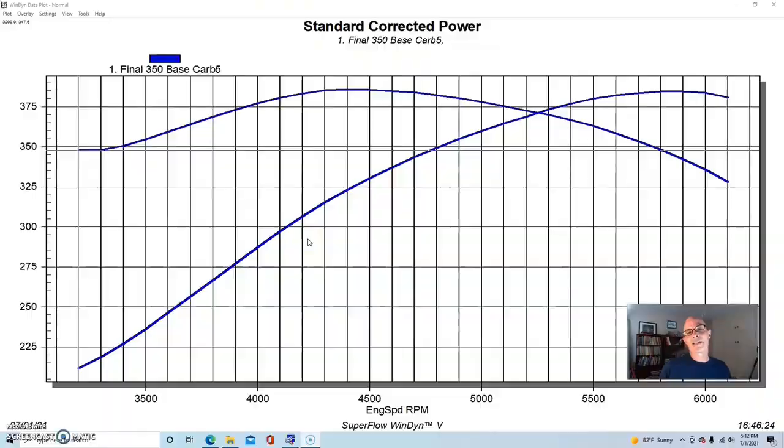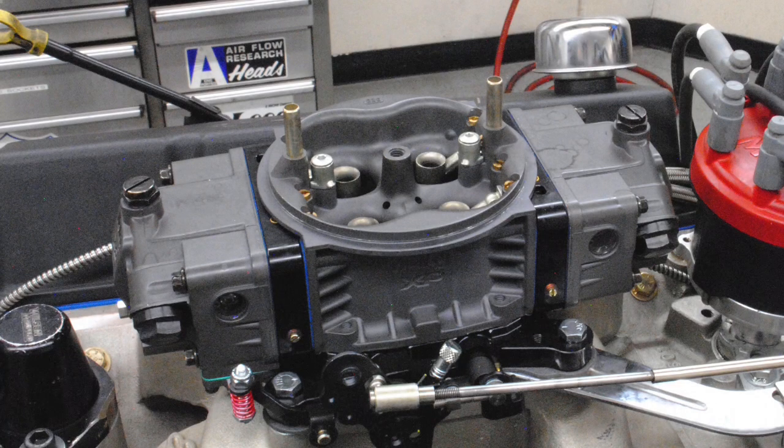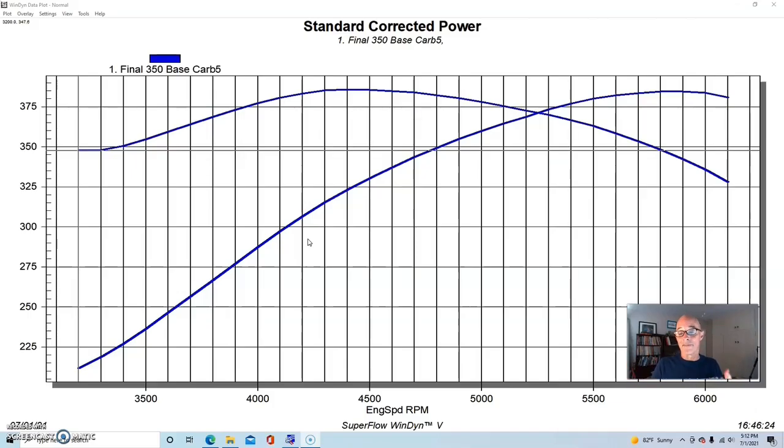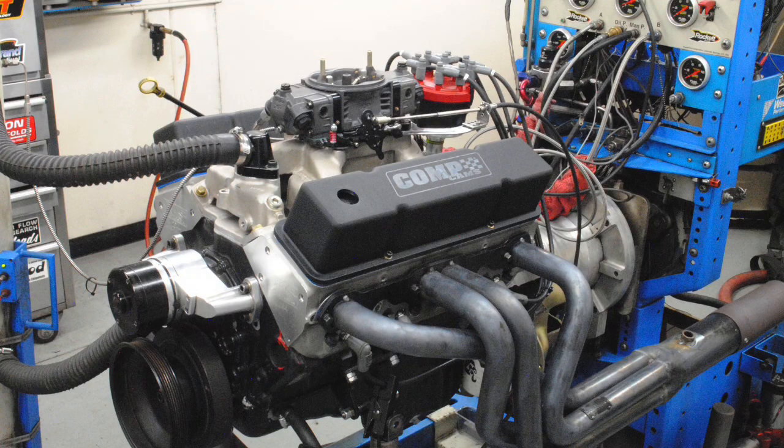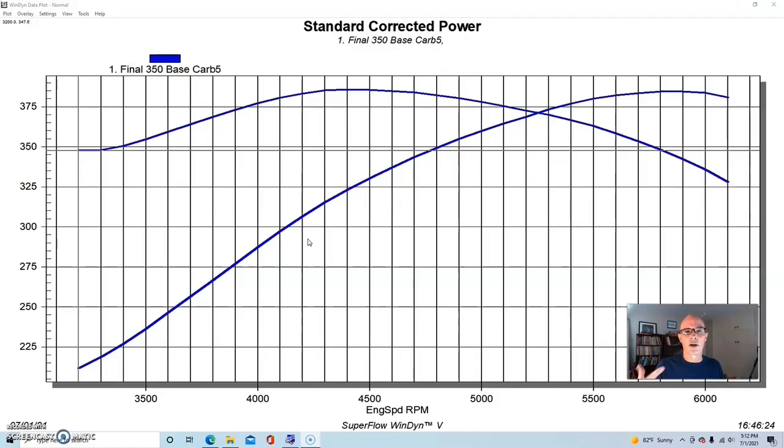Now that we've satisfied all those knuckleheads on the internet about the carburetor, in reality a 650 carburetor is more than enough for this power output. But in typical small block Chevy modified fashion, we are up near 400 horsepower with our modified combination.